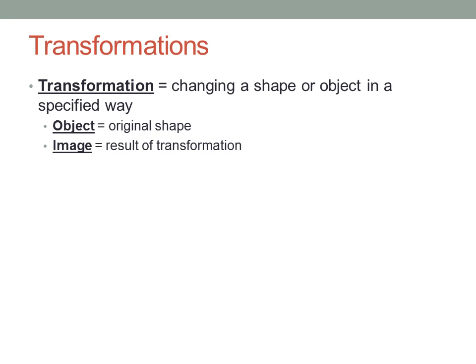A transformation is a change that you make to a shape or an object in a specific way. You specify very precisely exactly what the change will be. We use the word object to refer to the original shape that you started with, and the word image to refer to the new shape you get by applying the transformation. The object is the original shape. The image is the result.